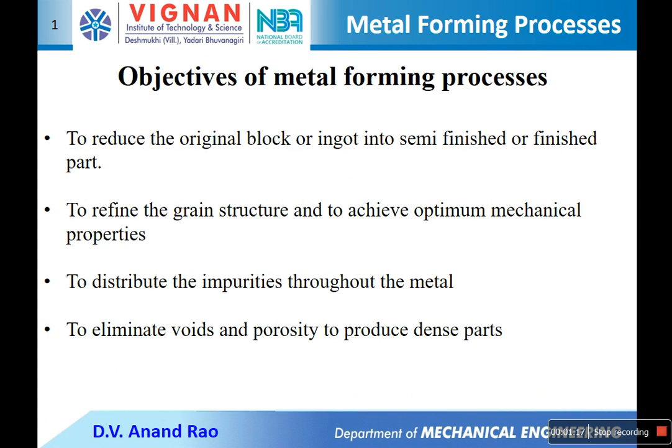Some of the objectives of metal forming processes are: mainly to reduce the original block into semi-finished or finished parts, to refine the grain structure, and to achieve optimum mechanical properties. Also to distribute the impurities throughout the metal, and to eliminate voids and porosity to produce dense parts.